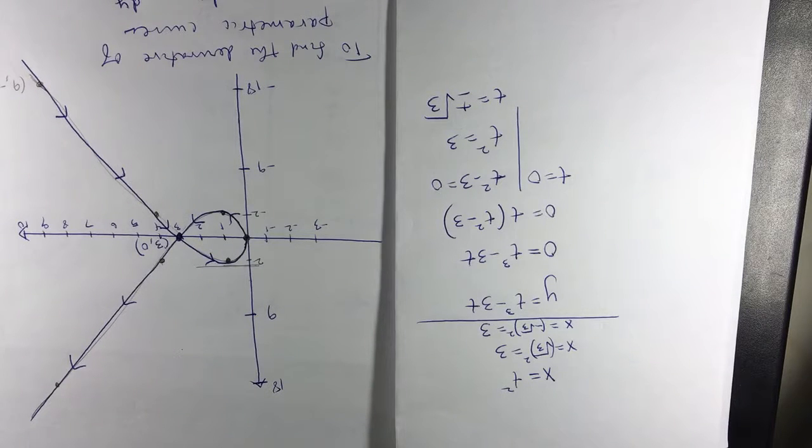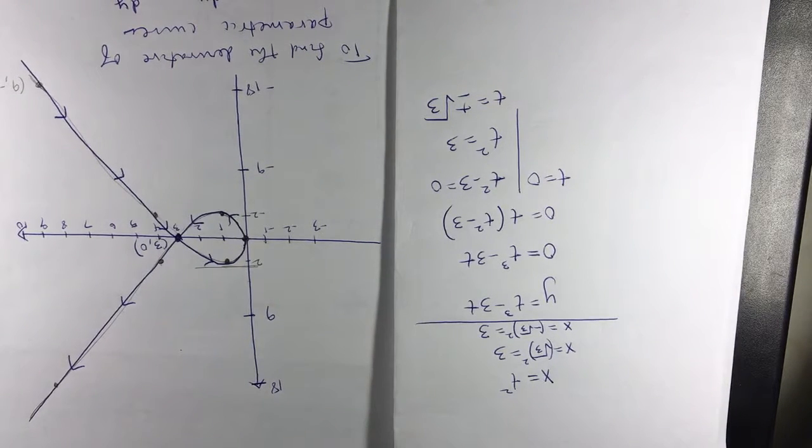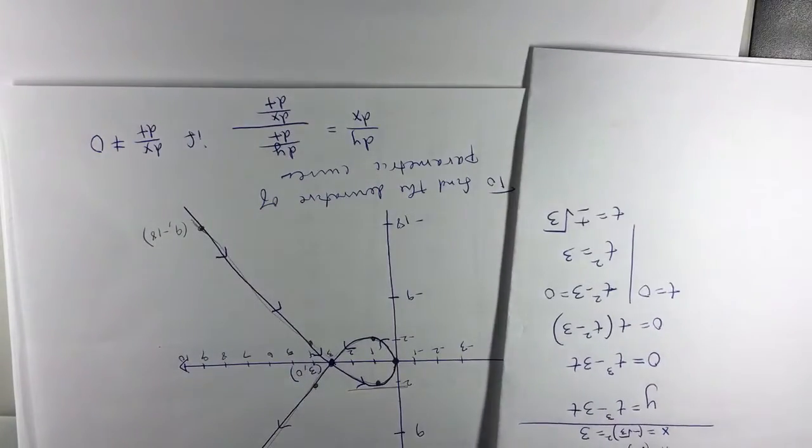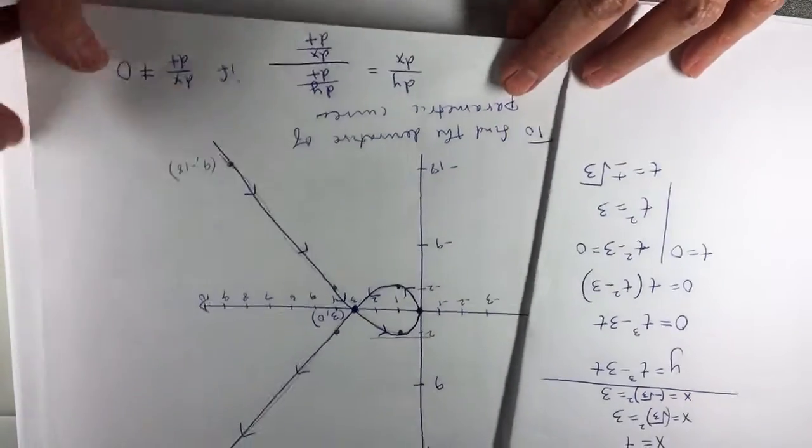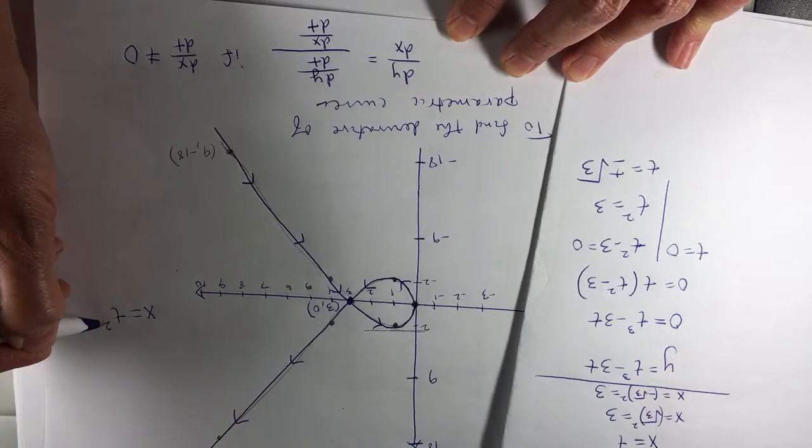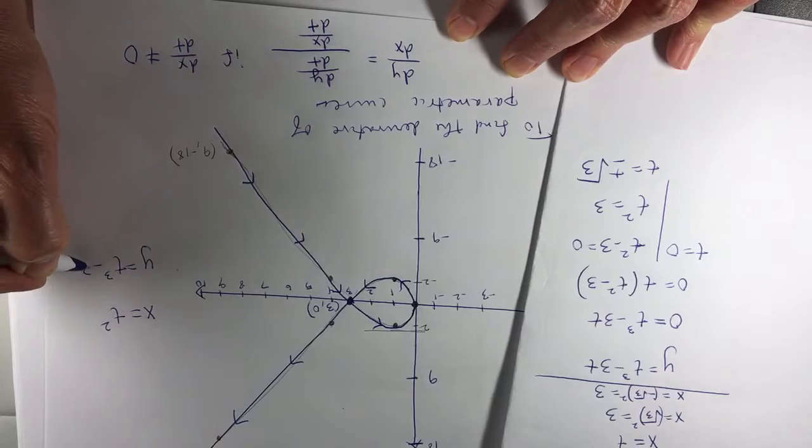And that's if dx over dt is not 0. So that's how we'll find derivatives. For this particular problem, let me try to write these correctly now. x equals t squared, y equals t cubed minus 3t.